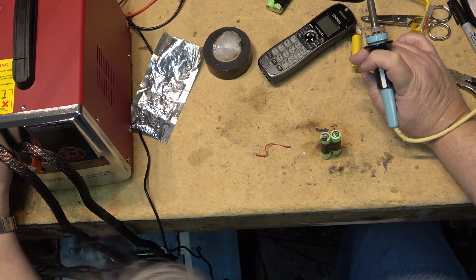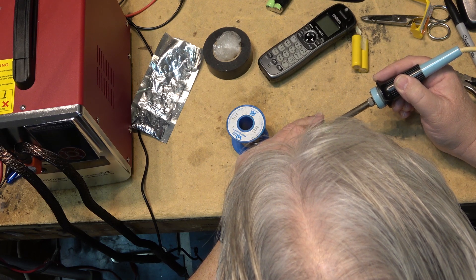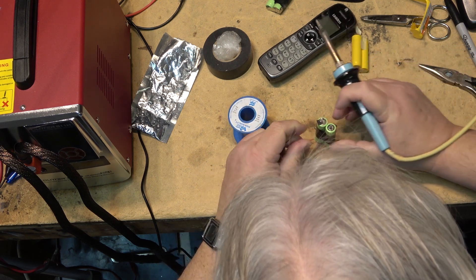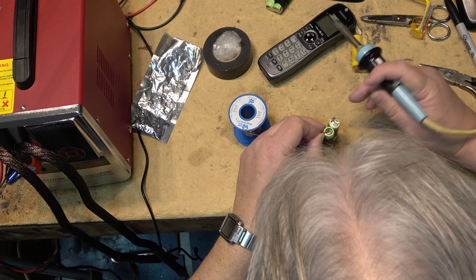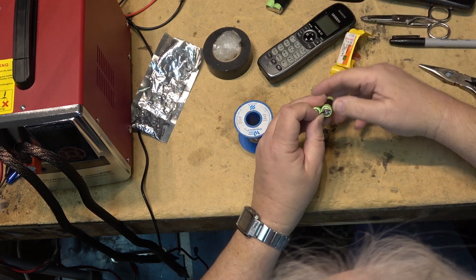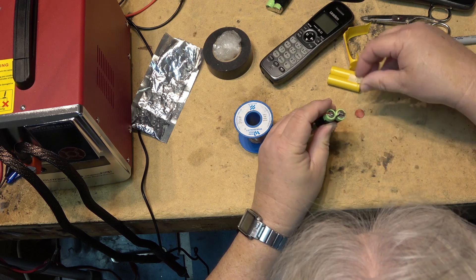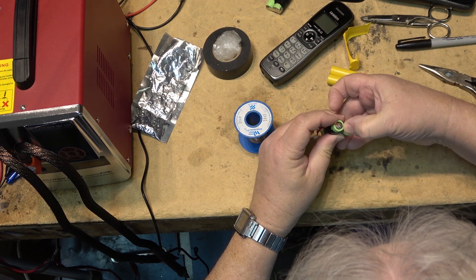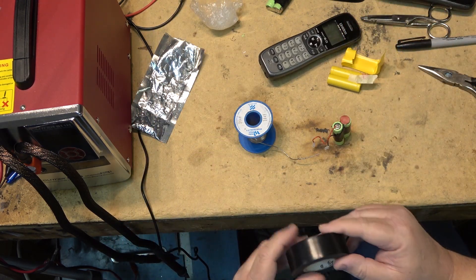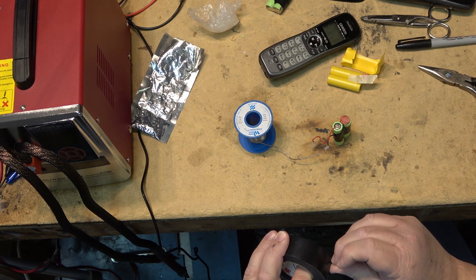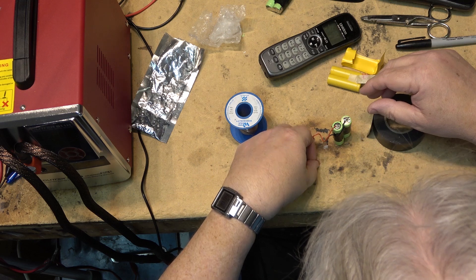So here's our positive terminal. Since I don't have heat shrink tubing that size, I'm just going to tape it up with good old black tape just to prevent any short circuits, and then the battery pack can go back in the cordless phone.